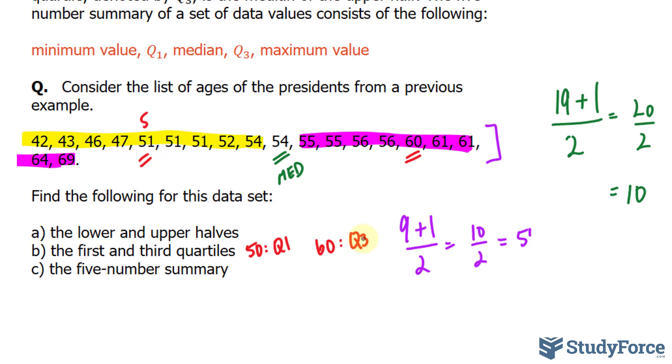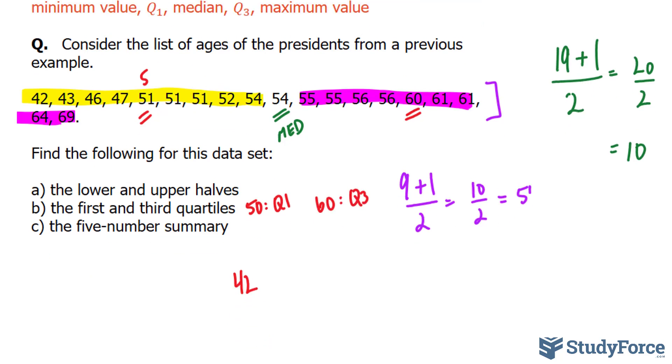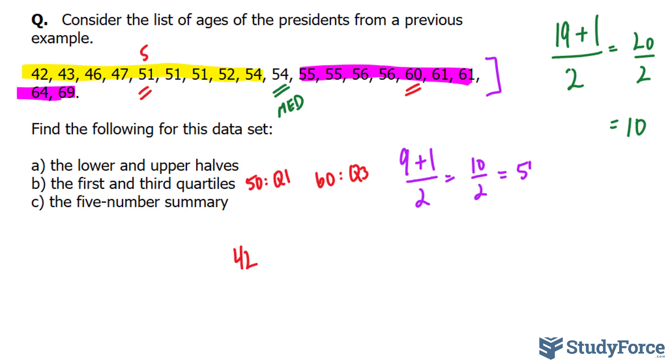In question C, the five number summary, they want the whole thing. We write down 42. That's the lowest number. And then the Q1 value is 50.